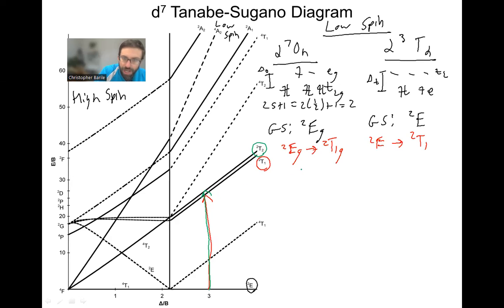Next is going to be a doublet T2. Just a little bit higher in energy than the doublet T1 transition, but these are going to be two separate peaks. Might not be able to resolve them too well on your spectrometer. So they might just look like a little doublet sort of with a shoulder or something like that. But we're going to get doublet EG going to doublet T2G. And here we get doublet E going to doublet T2.